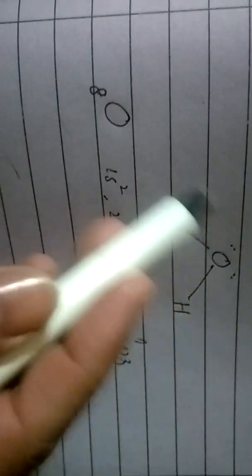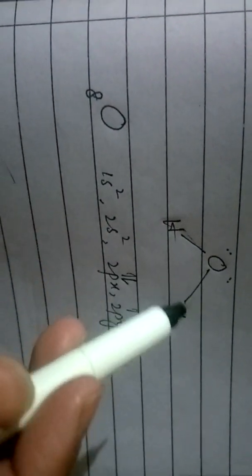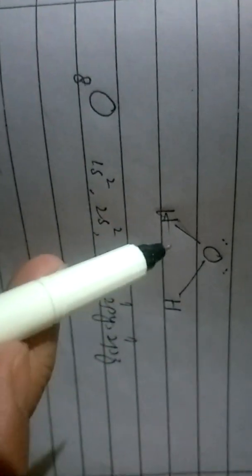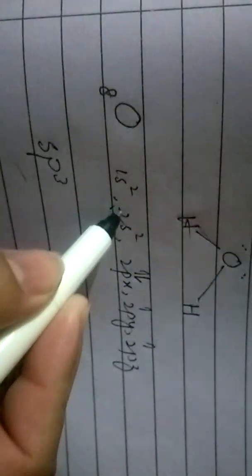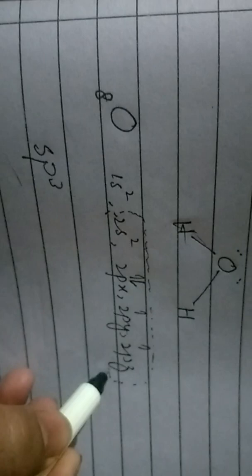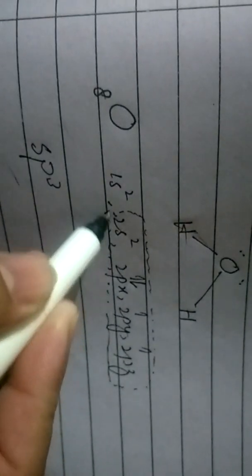Whenever you see a molecule which contains single bonds, just remember it has sp3 hybridization. Every molecule showing single bonds has sp3 hybridization. Water can show sp3 hybridization, which is formed by the overlap of one 1s and three 2p atomic orbitals.